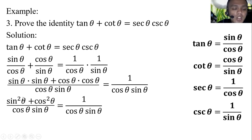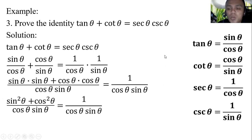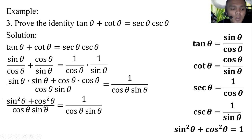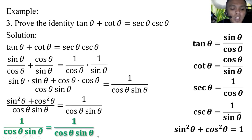From the fundamental identity, sine squared theta plus cosine squared theta is equal to 1. Substituting, we have 1 over cosine theta sine theta equal to 1 over cosine theta sine theta. They are equal, so the identity is proved.